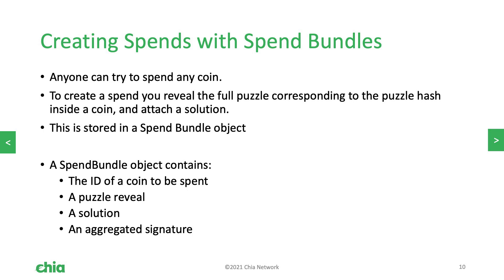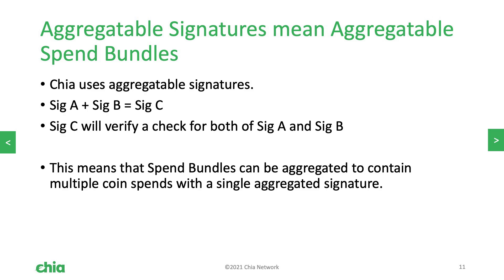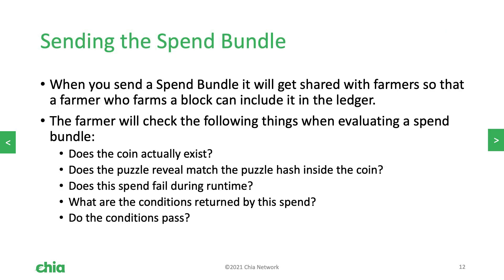These are stored inside of a spend bundle object. A spend bundle contains the ID of the coin that you want to spend, the puzzle reveal, the solution, and an aggregated signature. Chia uses BLS signatures which are aggregatable. This means that if you have signature A and signature B, you can aggregate them to create signature C. Signature C will then verify if there is a check for both signature A and signature B. This means we can aggregate spend bundles together to contain multiple coin spends with a single aggregated signature. When you send a spend bundle off to the blockchain, it will get shared around so that when a farmer wins a new block, they can include it onto the blockchain.